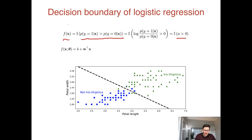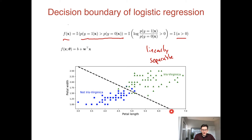If our training examples are linearly separable — that is, if there exists some hyperplane that perfectly separates our positive from negative examples in the training data — then logistic regression will find such a hyperplane. Because logistic regression gives the global optimum, and if the data is linearly separable, that hyperplane exists giving perfect accuracy, so logistic regression will find it.